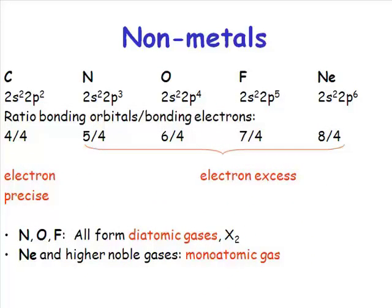As you get to carbon, you have as many electrons, i.e. four, as you have orbitals, and you form these electron-precise compounds. By the time you get to nitrogen in group 15,